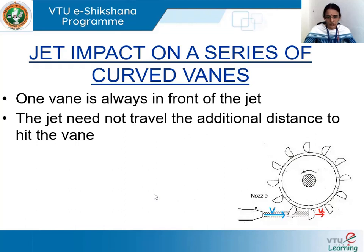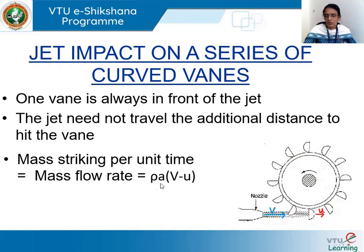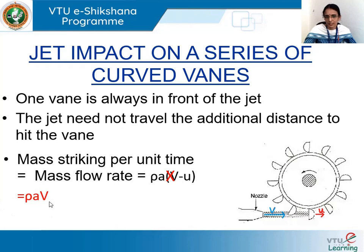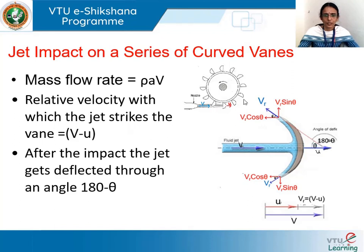Since the jet does not have to travel additional distance, the mass flow rate striking the vane differs from the single-vane case. For a single moving vane it was ρa(v−u), but here the mass flow rate is ρav — the entire mass from the nozzle is assumed to strike the vane, as in the case of a stationary vane. This is a very important difference to note.